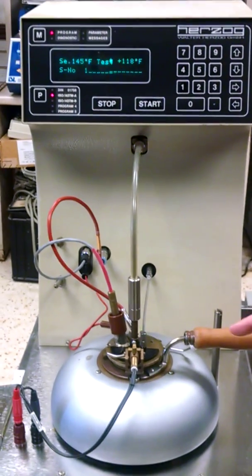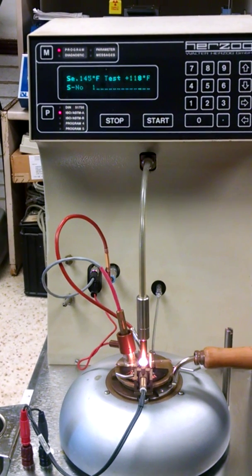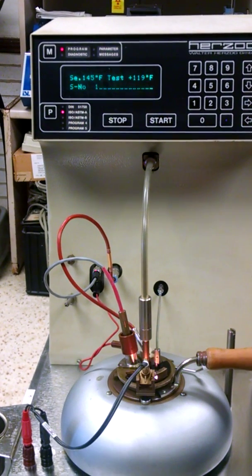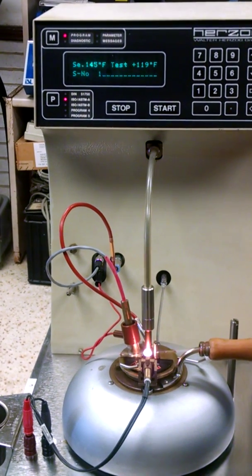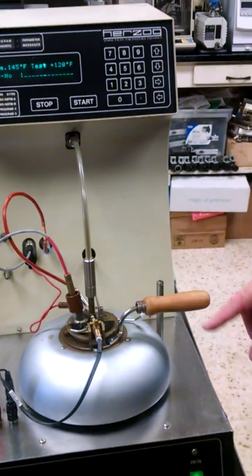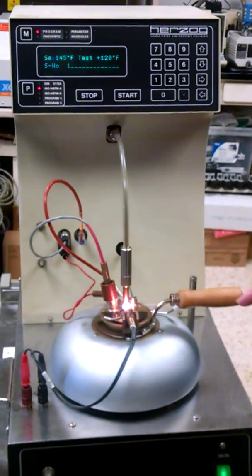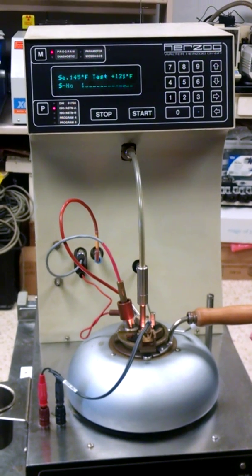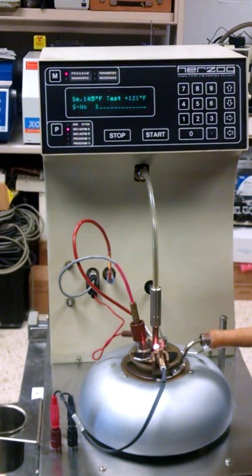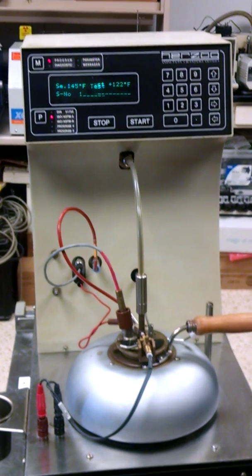The nice thing about this, this is not a gas flame. This is an electric flame. So some of your manual flash point testers, you have to use gas. And it's a little gas flame that dips down in it. Which you really don't want open flame in a lot of labs. So this is nice. It's not an open flame. It's an electric flame. The heat is electric. So you don't have any gas except for your sample.